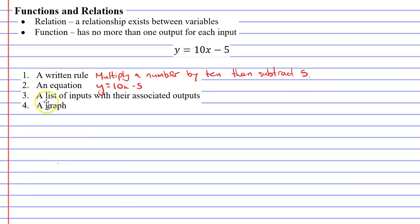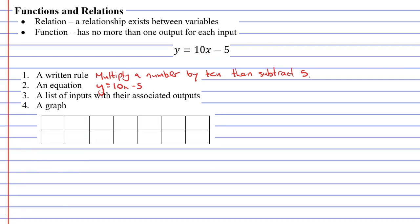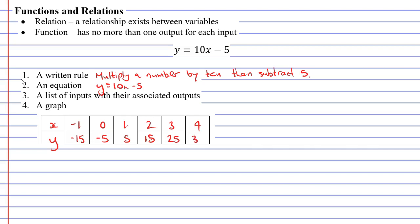Number 3 is a list of inputs with their associated outputs. This is something you've been doing for a long time — we're simply going to represent this as a table of values. We write down some x values: negative 1, 0, 1, 2, 3 and so on. This is our list of inputs. We input these x values into our equation and we get our outputs, which are our y values — such as negative 15, negative 5, and so on.